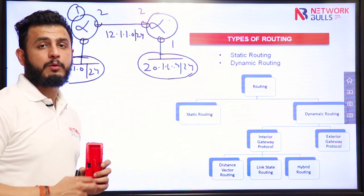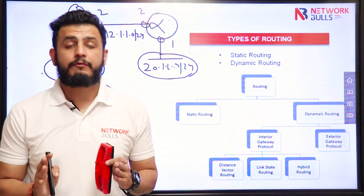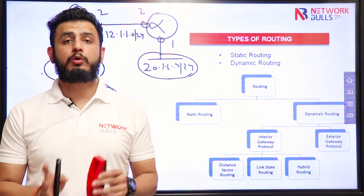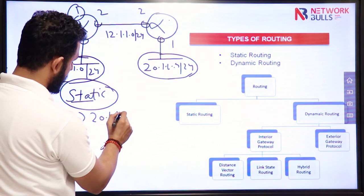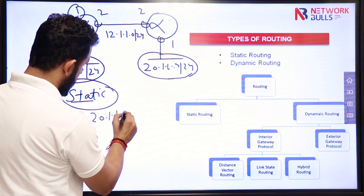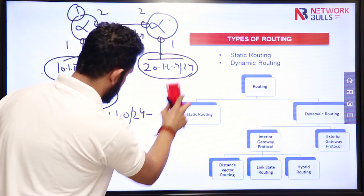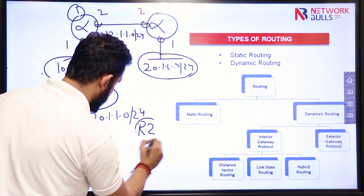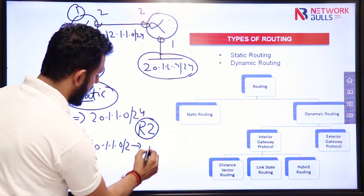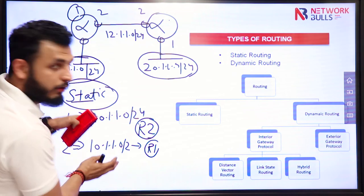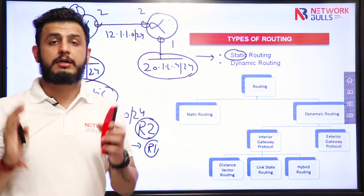What is static routing? As the name suggests, we have to tell both routers manually how to reach a particular destination. I will tell router 1 that if you want to reach the 20's network, go to R2, and I will also tell R2 that if you want to reach the 10's network, go to R1. This act of telling the routers about these networks manually is called static routing, because we are giving information to the router statically.